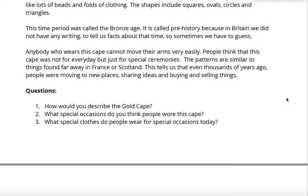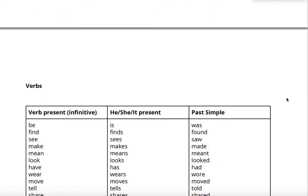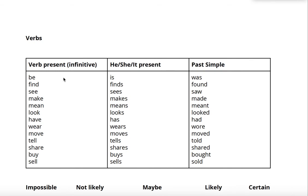Now to help you answer these questions we have here a list of verbs found in the text. Here you can see the verb in the infinitive — to be. This is how you find a verb in a dictionary. Here you have the third person — that's he, she or it — in the present tense, so that's things happening in the present moment: he, she or it is. And in this column we have how this same verb is used in the past simple: he, she, it was.